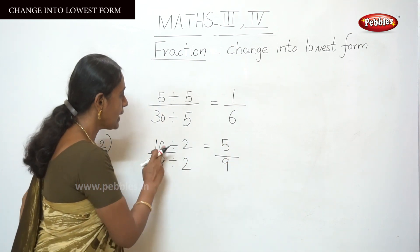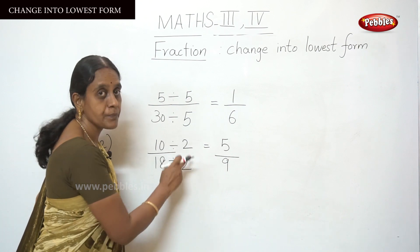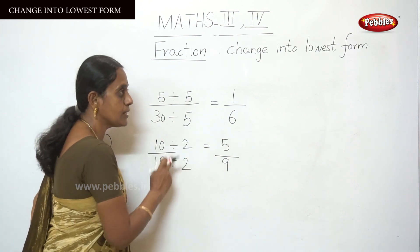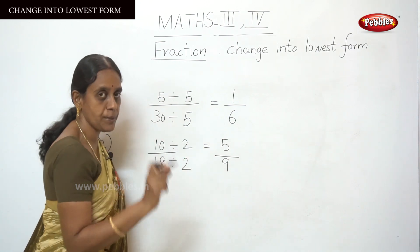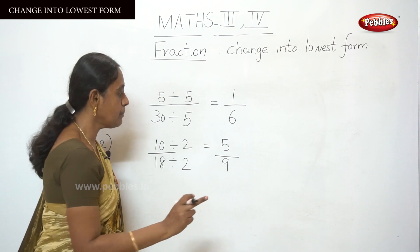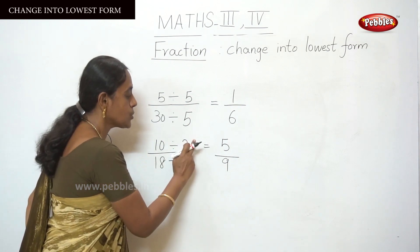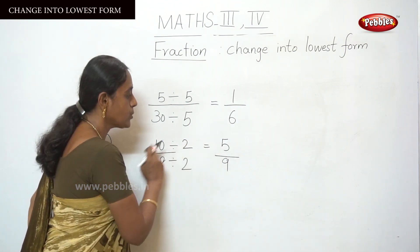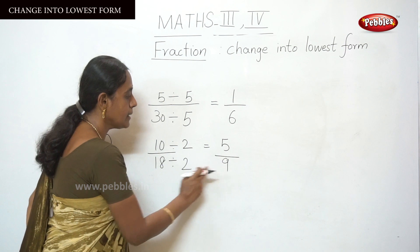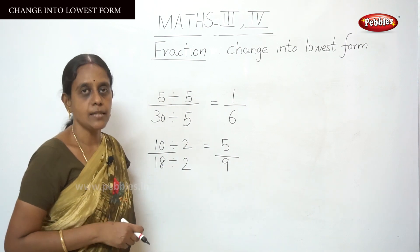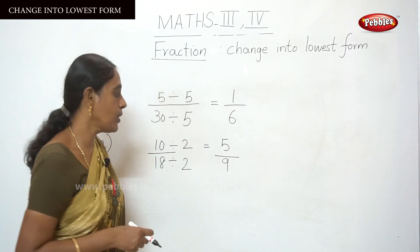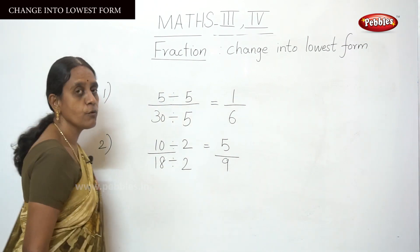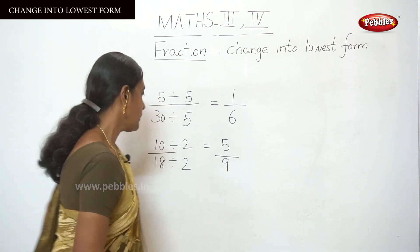You have to divide the numerator and denominator by the same number — here that is 2 and 2. That is 5 twos are 10, 9 twos are 18. Do you understand? This is the answer — 5 by 9.